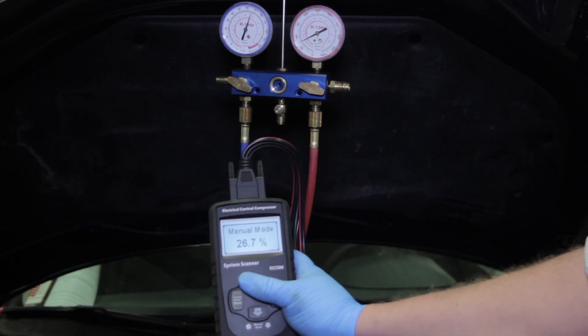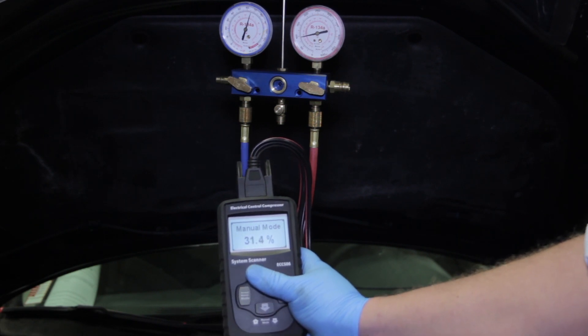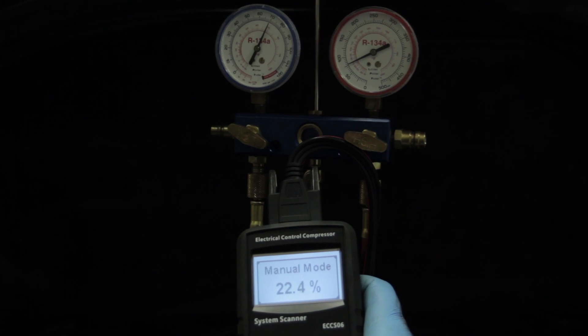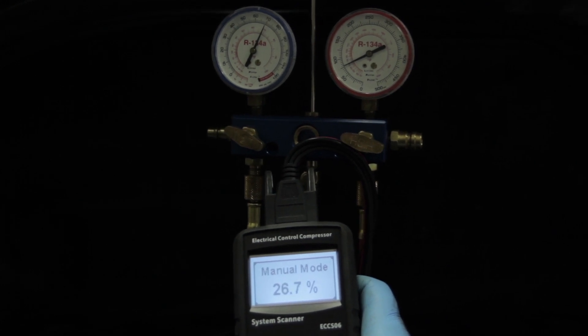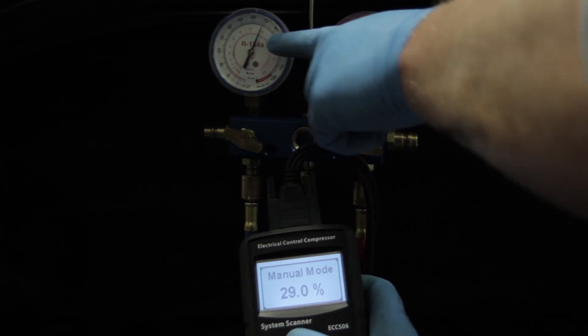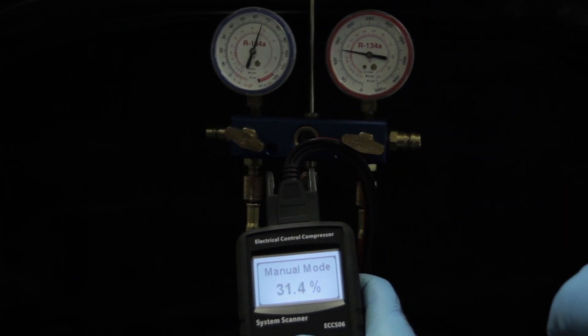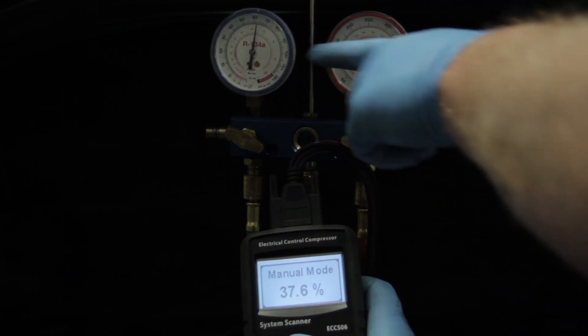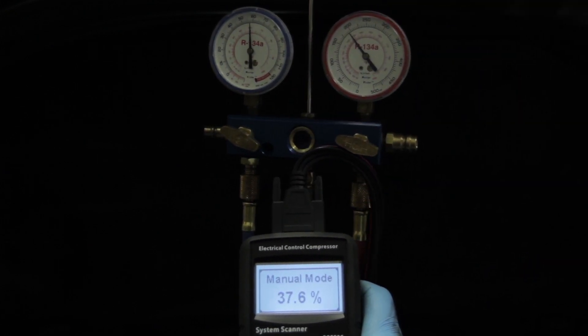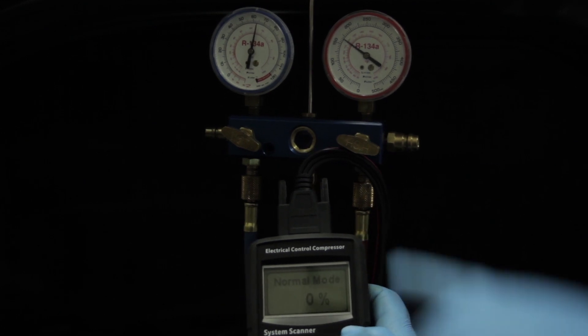So I'm going to switch over to manual mode here and hit the up arrow several times, increasing the duty cycle here from the tool to the compressor, turning it on. And we see our pressures begin to change here on the gauge. That's indicating to us that the compressor is actually working. It's able to pump the refrigerant through the system, build the pressures and start the cooling process here.